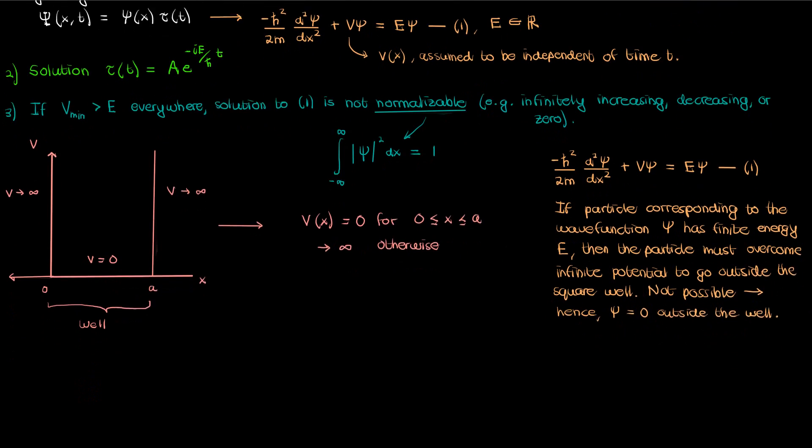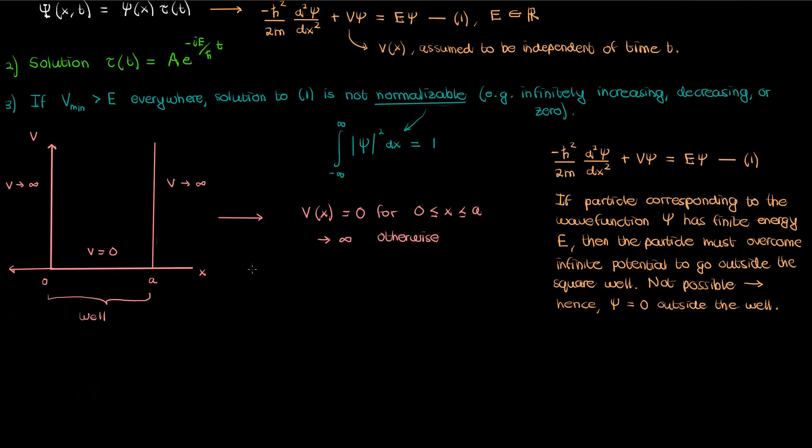As a result small psi equals 0 outside the well. Mathematically another way to think about it is that outside the well, since V is infinite, the second derivative of small psi with respect to x must also be infinite given equation 1. But we can't have the second derivative of psi with respect to x approach infinity outside the well since that's not a physical solution. The only way to circumvent this is to have small psi equal to 0 everywhere outside the well.